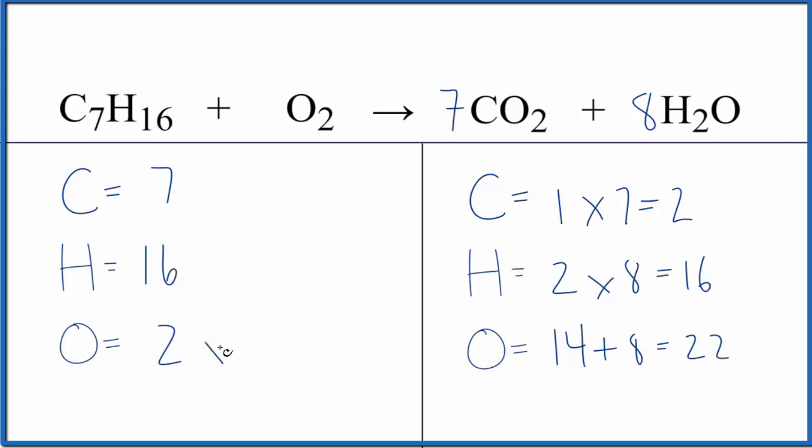So two times some number will give us 22. Two times 11, that gives us 22, and we're done. This equation is balanced.